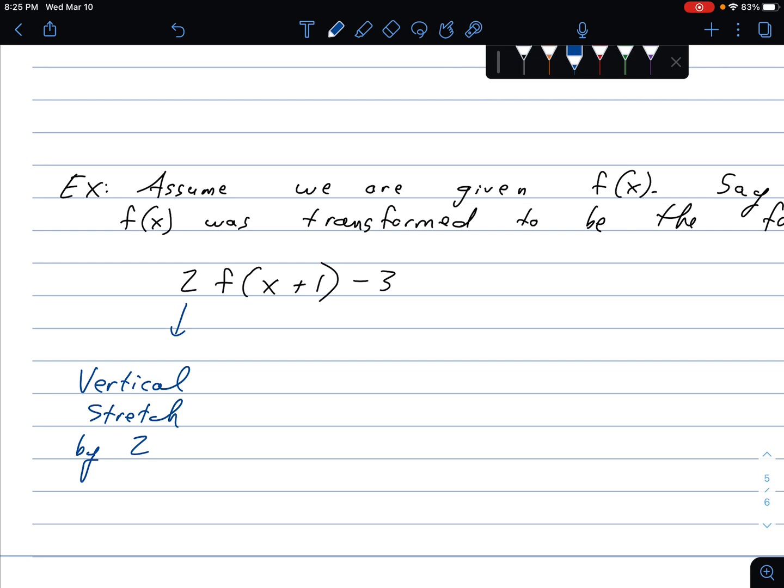Now over here, I'll do this in a different color so we notice it. This is internal. Which tells me it's horizontal. Internal is always a horizontal change. Horizontal is also always opposite of what we think. So horizontal. And I am going to slide this because it's a plus or minus. The plus makes me think it's to the right. But it's actually to the left. Left one unit. So that tells me I'm sliding to the left one unit.